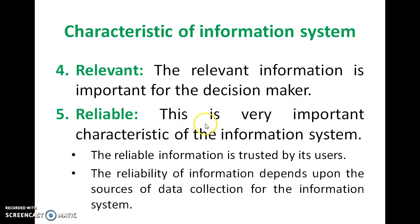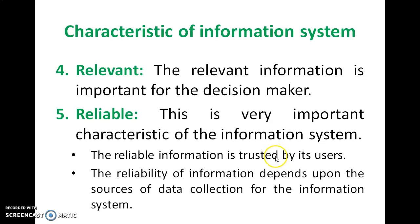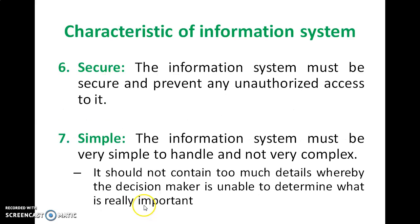Relevant — the relevant information is important for decision makers. Reliable — this is a very important characteristic of the information system because it is trusted by its users. Reliability of information depends upon the sources of data collection for the information system.